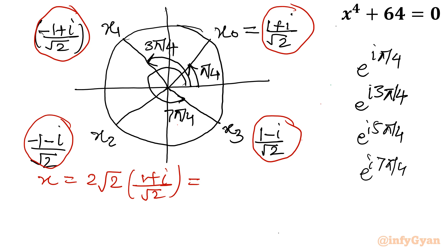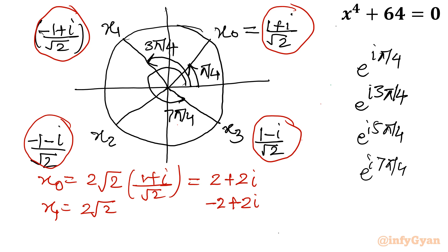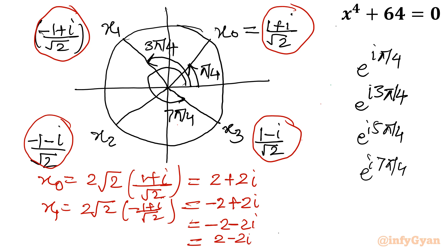Putting the values in, there are four solutions. This is x₀: 2√2 times (1 + i)/√2 = 2 + 2i. This is x₁: 2√2 times (−1 + i)/√2 = −2 + 2i. The third value x₂ gives −2 − 2i, and the fourth value x₃ gives 2 − 2i.